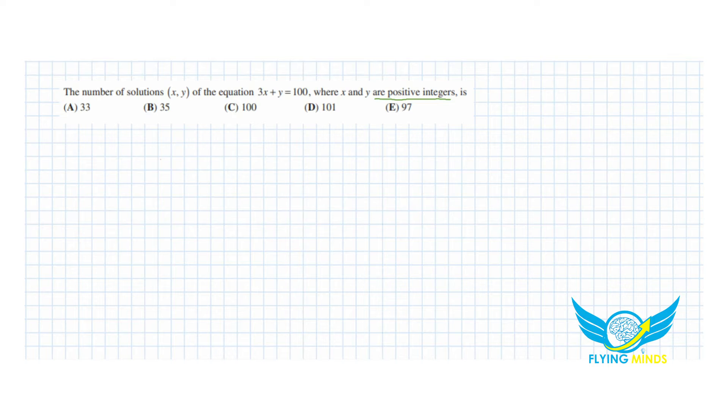Let's rearrange the equation. We have 3x plus y equals 100. From here, 3x equals 100 minus y, and x equals 100 minus y divided by 3.